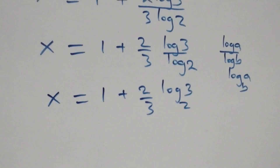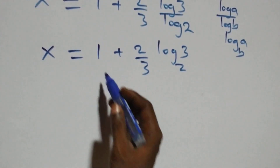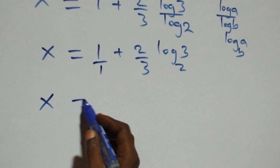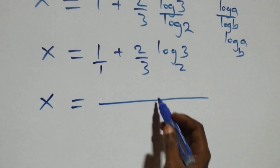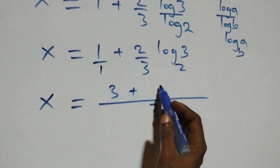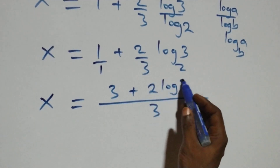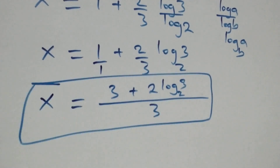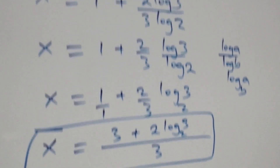Combining over a common denominator, we write 1 as 3 over 3, so x equals (3 plus 2 log 3 to base 2) all over 3. Therefore the value of x in this problem is x equals (3 plus 2 log₂3) all over 3. Now let's check if this satisfies the given problem.